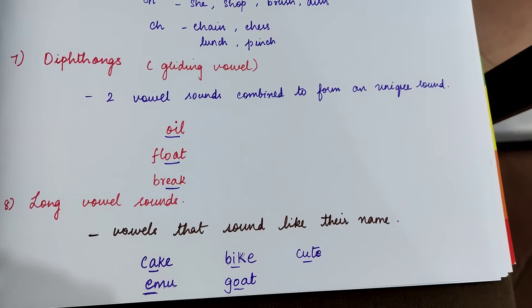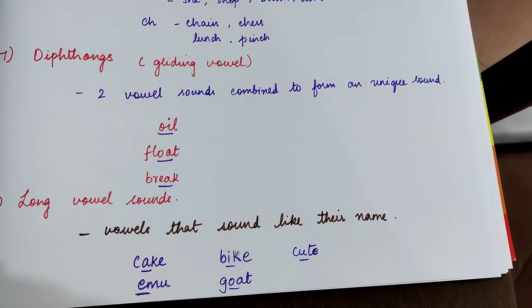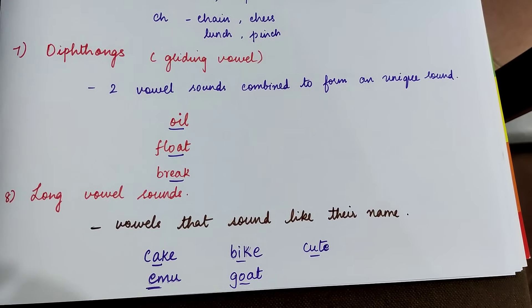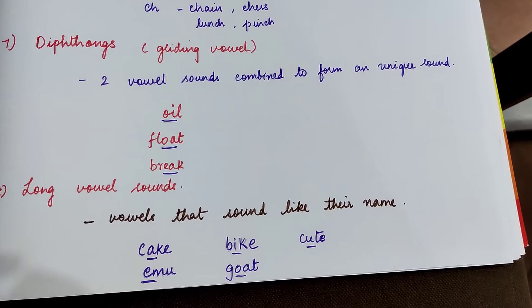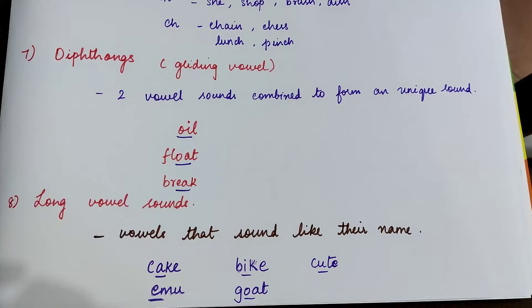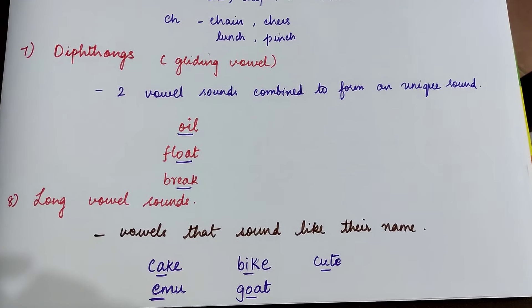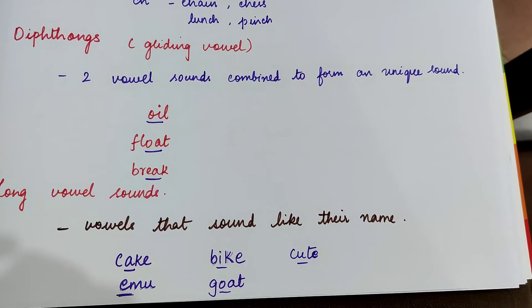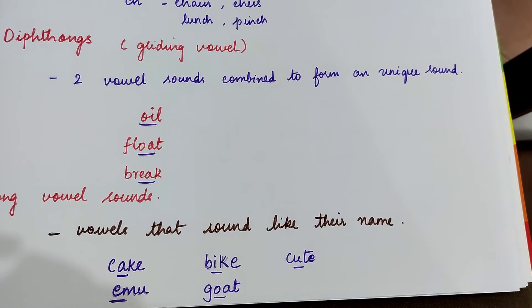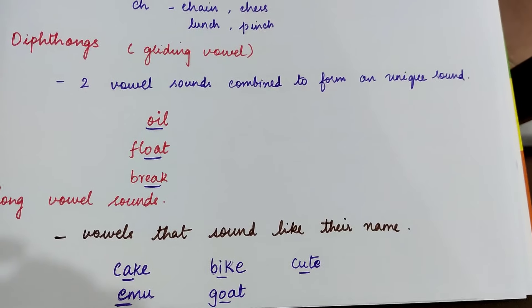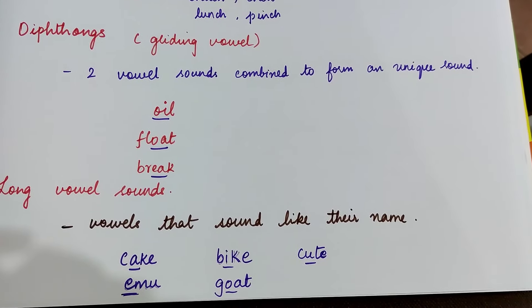The next topic is long vowel sounds. Vowels that sound like their name. For example, in the word cake the a has its own name. I mean the sound and the letter is the same, a. And in bike it is the same i. In emu we hear the sound e. In goat it's o. In cute it's u.